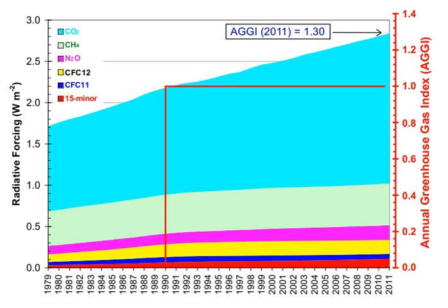Aside from water vapor, which has a residence time of about nine days, major greenhouse gases are well mixed and take many years to leave the atmosphere. Although it is not easy to know with precision how long it takes greenhouse gases to leave the atmosphere, there are estimates for the principal greenhouse gases.